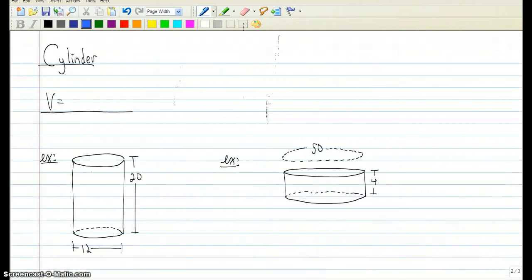A cylinder is not a prism, but we treat it like one. So instead of saying that the volume of the cylinder is base times height, we know that the base is a circle. The area of a circle is pi r squared. So for a cylinder, we can say that the volume is pi r squared times the height.